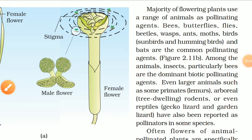The majority of flowering plants use a range of animals as pollinating agents. Bees, butterflies, flies, beetles, wasps, ants, moths, birds, sunbirds and hummingbirds, and bats are the common pollinating agents.